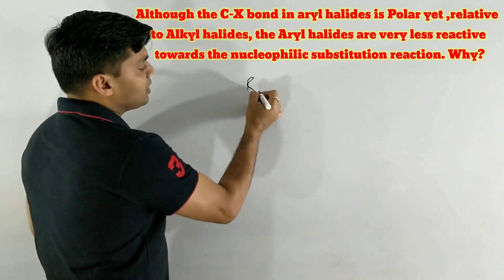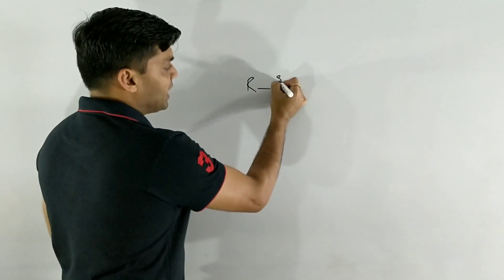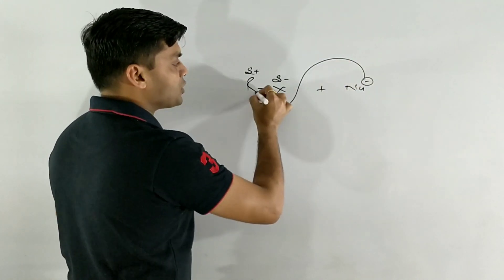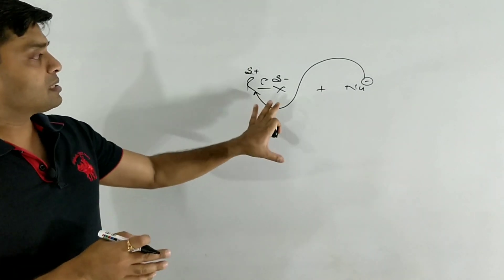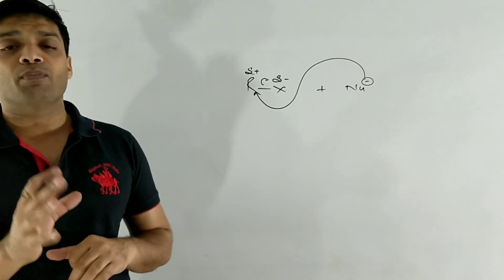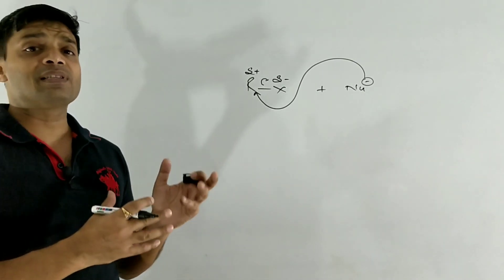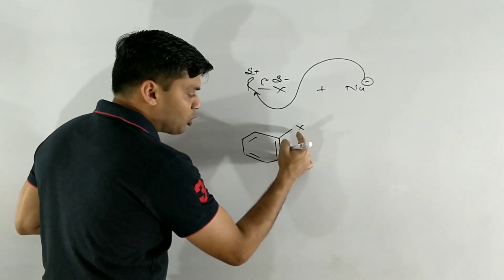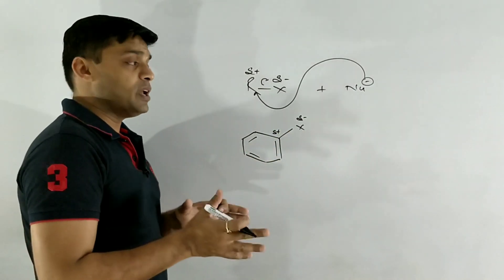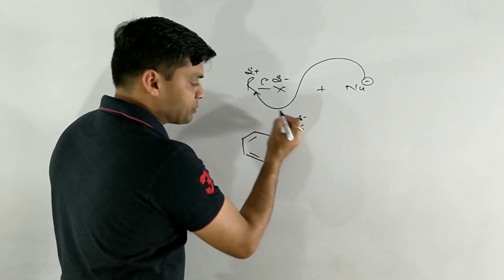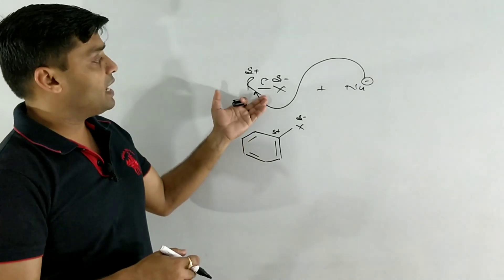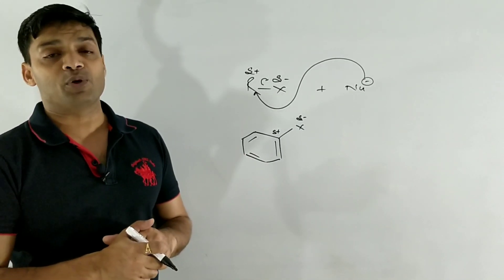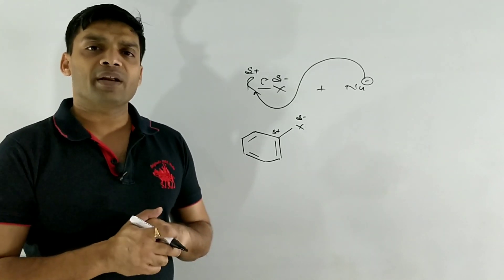Let me explain in simple terms. We all know that alkyl halides are polar molecules with partial negative and positive charge separation, and in nucleophilic substitution a nucleophile uses its negative charge to substitute the halogen. We discussed nearly 9 important nucleophilic substitution reactions for alkyl halides. Now we expect similar reactions with aryl halides because even in aryl halides the C-X bond is polar — halogen has partial negative and carbon has partial positive charge. So we expect a nucleophile to attack this carbon and substitute the halogen. But aryl halides are very less reactive towards these nucleophilic substitution reactions.